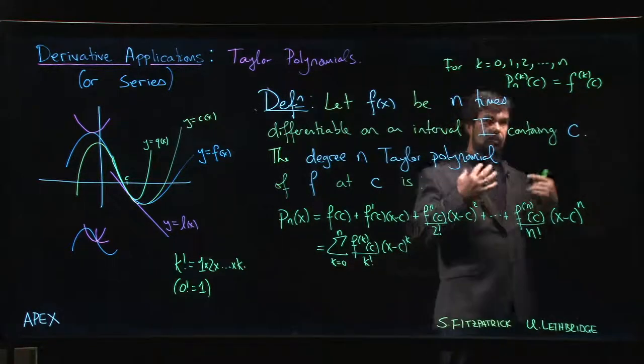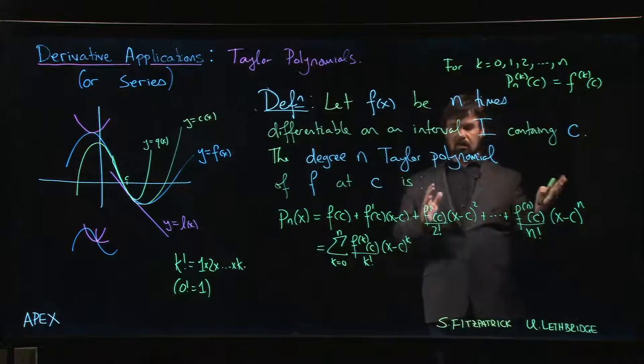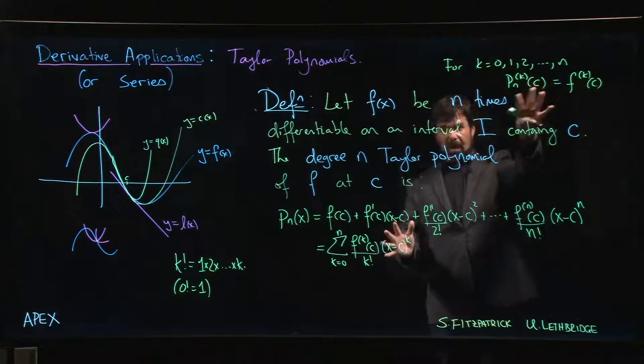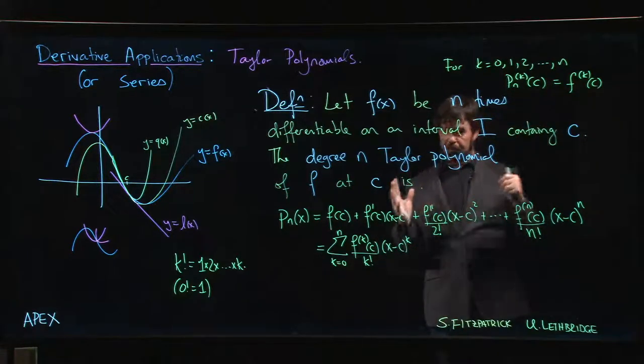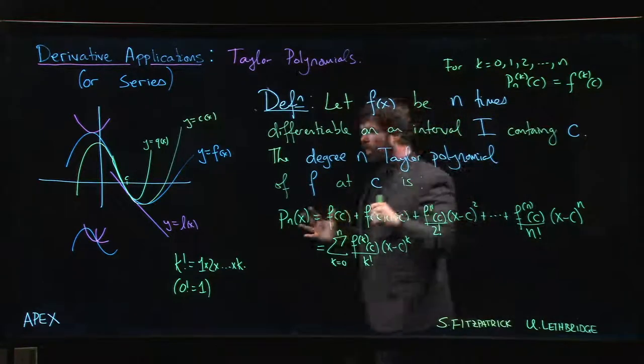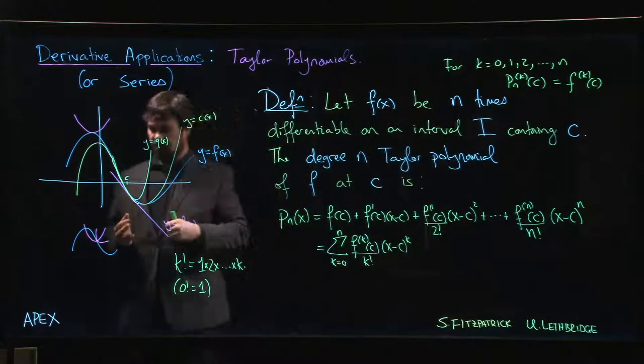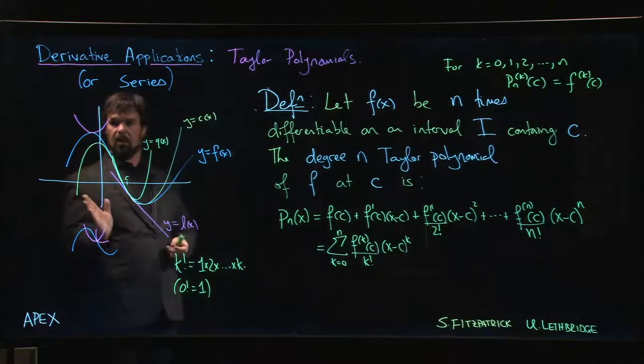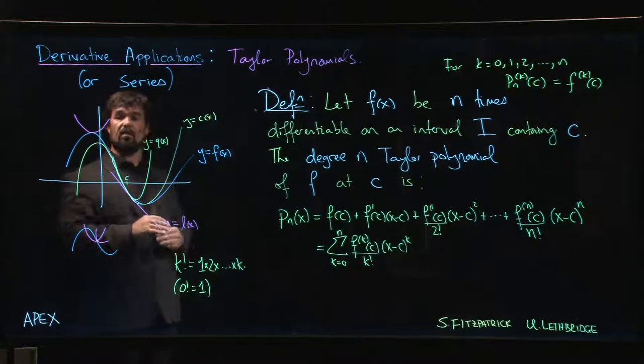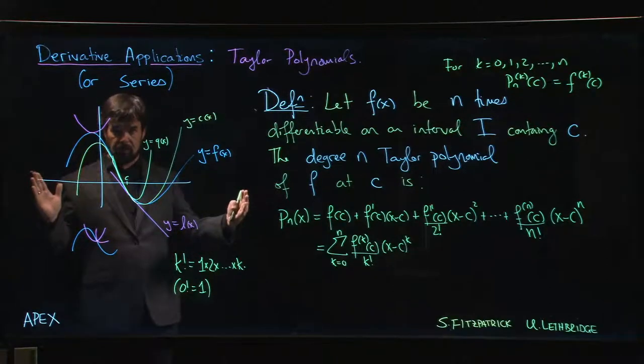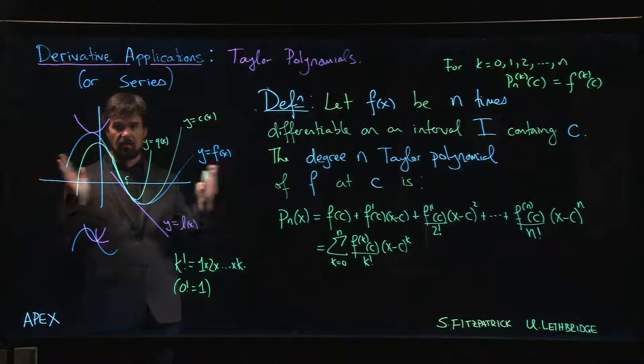The idea here is that you want the derivatives of your polynomial to match the derivatives of your function. When you do that, you find that the values of your polynomial agree very well with the values of your function, at least over some interval.